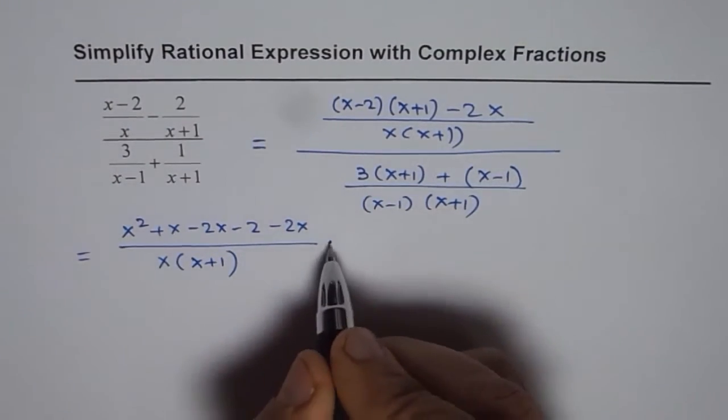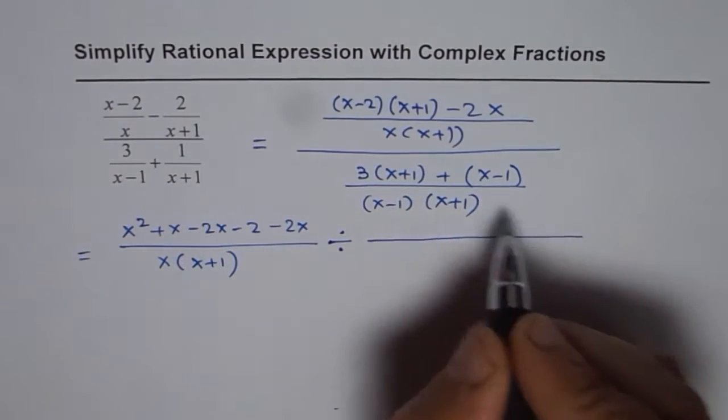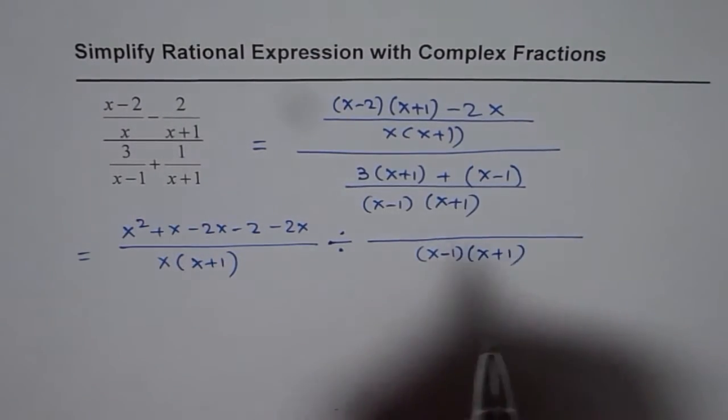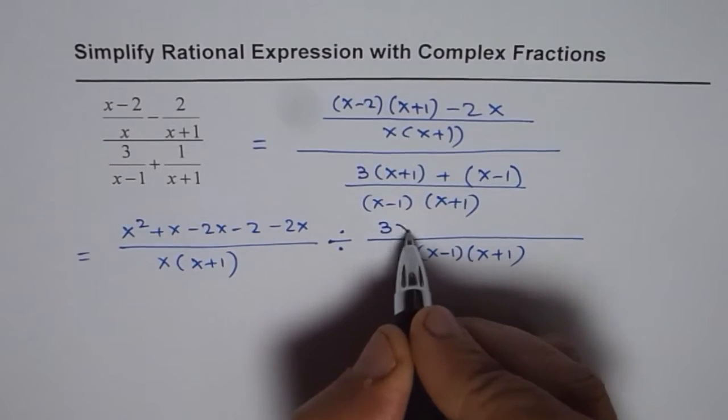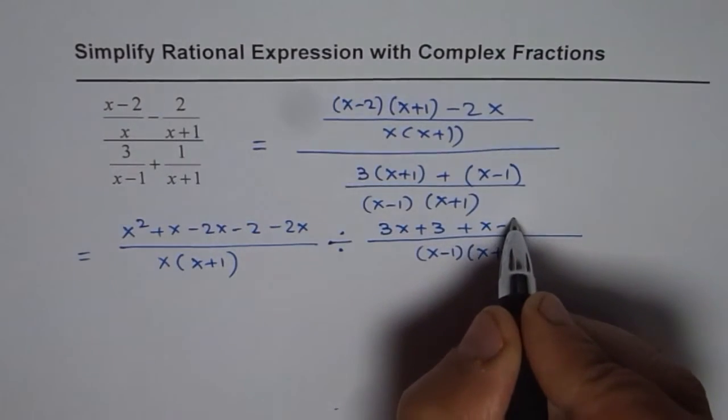And this denominator we can write as divided by, and then we can expand these also. We have x minus 1 times x plus 1, 3x plus 3, and here we have x minus 1.